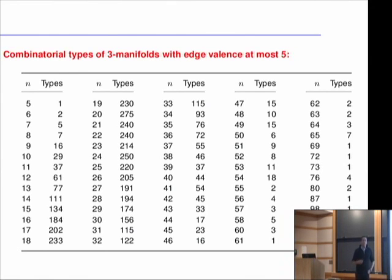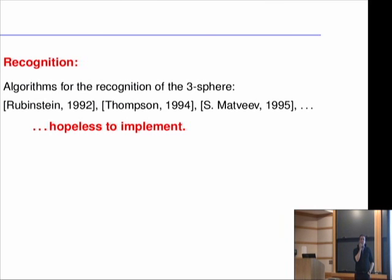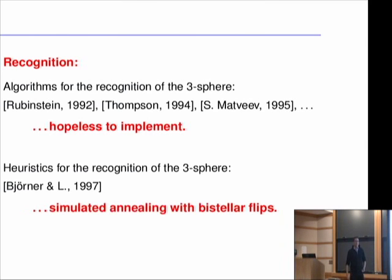Recognition of manifolds: why is this an issue? The computer enumeration yields examples found by gluing together tetrahedra — but how can you tell that such an example is a 3-sphere? There are algorithms for recognizing the 3-sphere, but some running times are like 2^(40,000) n-squared, which you would never implement. Theory says you can recognize a 3-sphere, but we want to do that in practice. Here is a simple heuristic based on simulated annealing with bistellar flips.